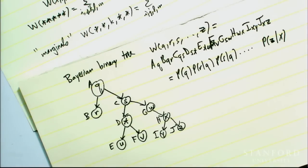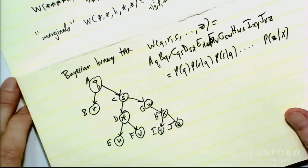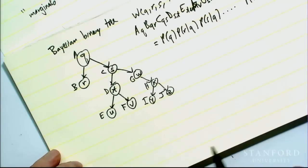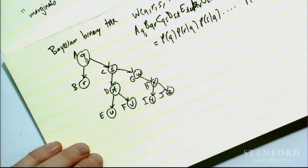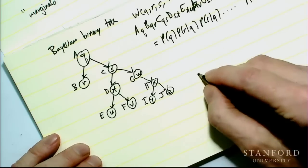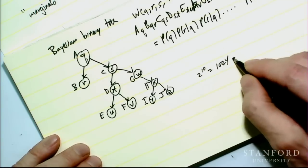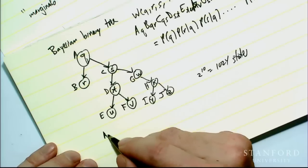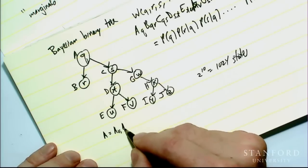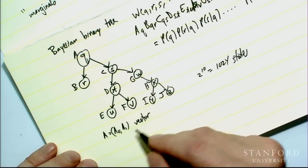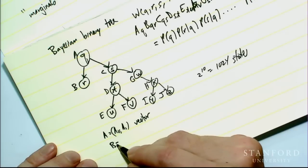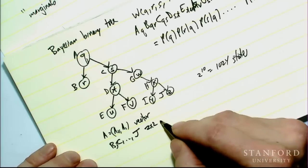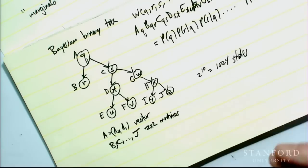Let's imagine the states are binary, so each variable Q, R, S through Z — ten of them — can be either zero or one. So I have two to the tenth, which is 1,024 states of the system. The vector A is (A-zero, A-one), and the others — B through J — are two-by-two matrices, say of complex numbers.